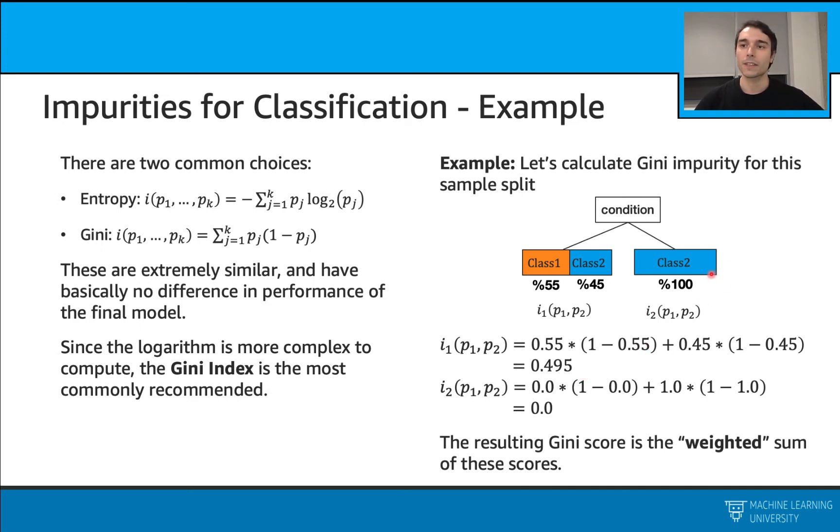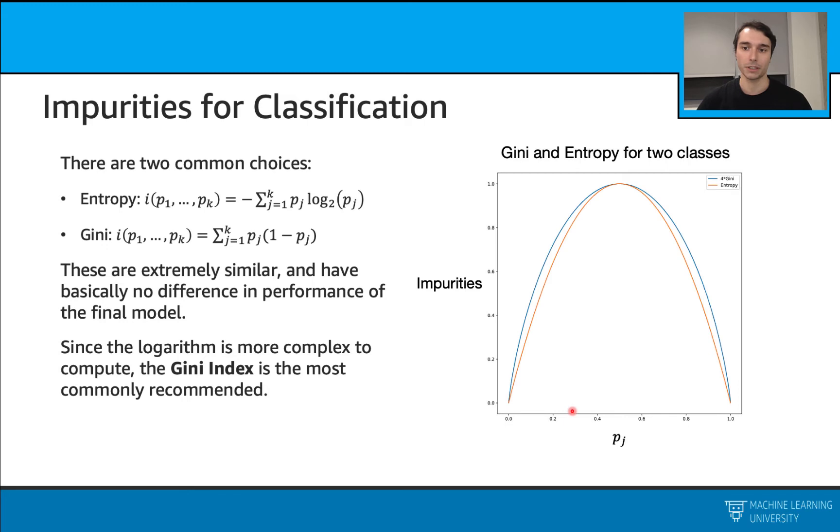For the second node, let's do this again. The probability of having class 1 is zero because I have none here, times 1 minus, plus 1 times 1 minus that. Overall, this will give me zero impurity. Again, this is not a surprise because we already know that if we are certain about the distribution here, it's just going to give us zero.